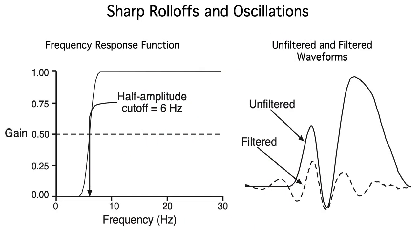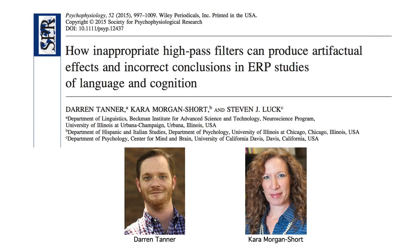And here's what happens if we use a frequency response function with a very steep slope — it actually induces artificial oscillations in the data. If you'd like to see how excessive filtering can lead to bogus effects and completely incorrect conclusions in real data, take a look at this paper that I wrote with two participants from the ERP bootcamp, Darren Tanner and Kara Morgan-Short.